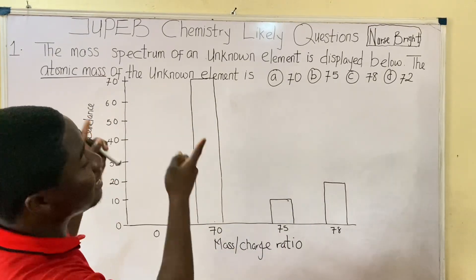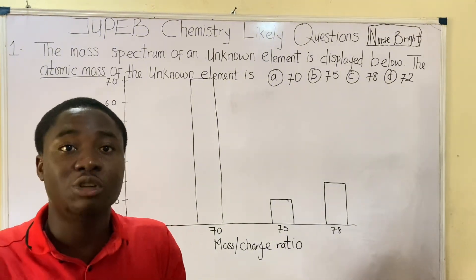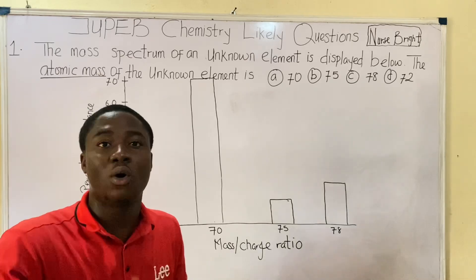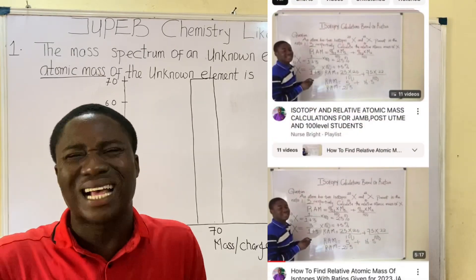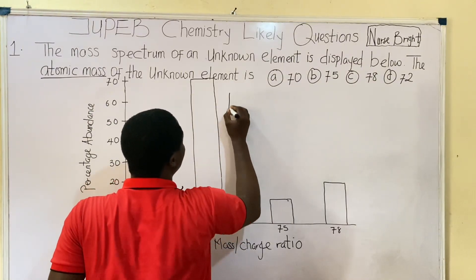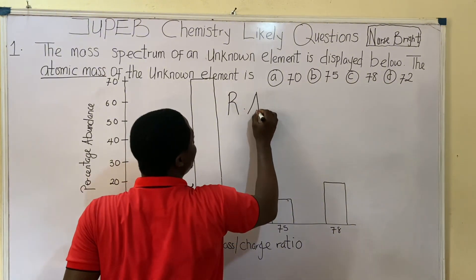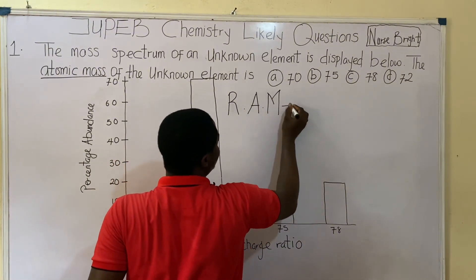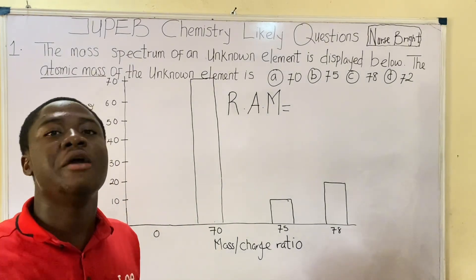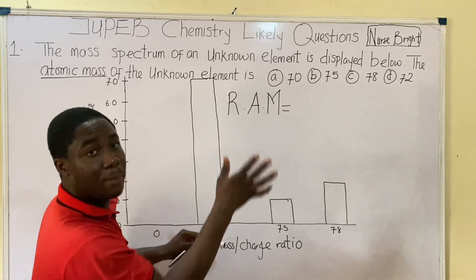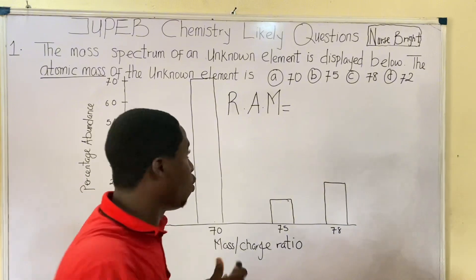It is extremely easy. Seeing this question, my mind will go back to a very introductory chemistry topic called isotopy and relative atomic mass calculations, because that's exactly what this question is all about. Before we interpret the question, I have to quickly write out the formula for relative atomic mass.